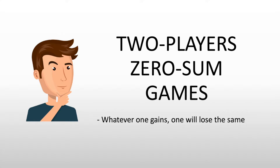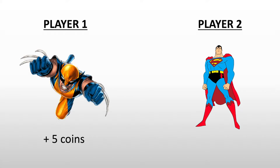Here, we will be discussing two players' zero-sum games. It means that whatever one gains, one will lose the same. For example, if player one has Wolverine and player two has Superman, if player one wins, he will gain five coins. That means player two would be deducted five coins. Thus, it is a zero-sum game.